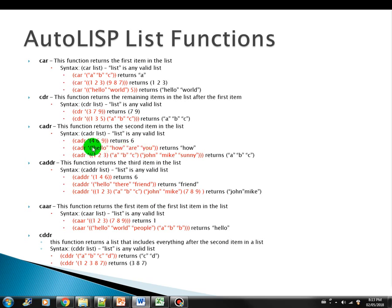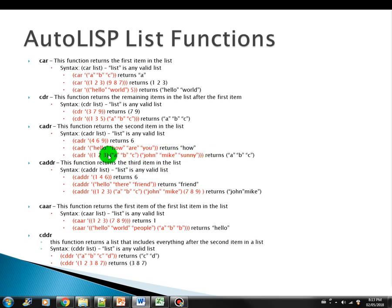Another example — we have here a list of strings. The CADR of this list is the second one, which is "how". In this third example, we have three lists within the list. So the second item in this list is the list of A, B, C. So that is the return.